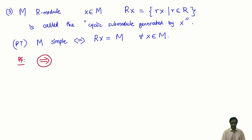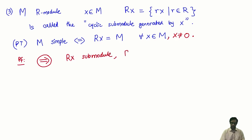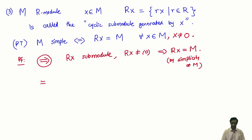One direction is easy. If M is simple, then it has no submodules other than 0 and the whole. For x ≠ 0, Rx is a submodule and Rx ≠ 0 since x ≠ 0. Therefore Rx must equal M, because there are no other submodules — this follows by simplicity of M.